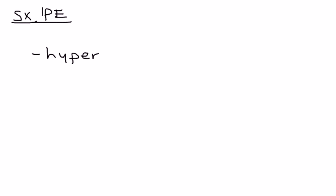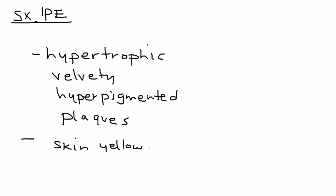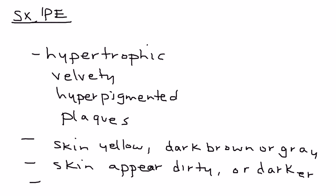In terms of symptoms or physical exam findings, commonly used terms to describe this on a clinical vignette include hypertrophic, velvety, and hyperpigmented. They are referred to as plaques. In terms of color, the skin can appear yellow, dark brown, or even grey, and is often described as appearing dirty or darker than normal.